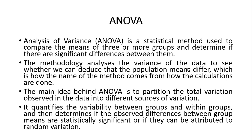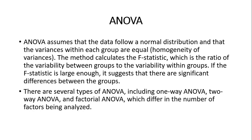The main idea behind ANOVA is to partition the total variation observed in the data into different sources of variation. Data में groups में total variation है और हर group के अंदर जो variation है, हम इन दोनों को compare करते हैं। It quantifies the variability between groups and within groups and determines if the observed differences between group means are statistically significant or if they can be attributed to random variation.